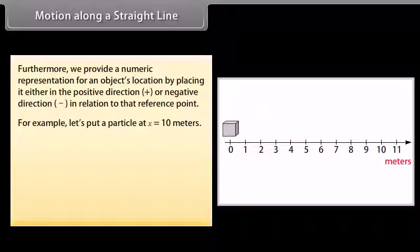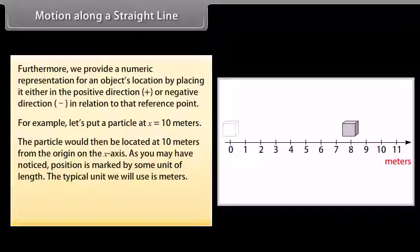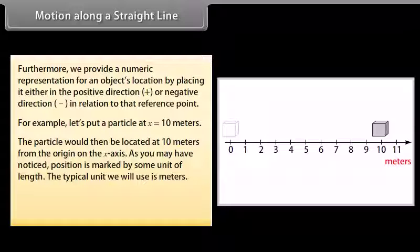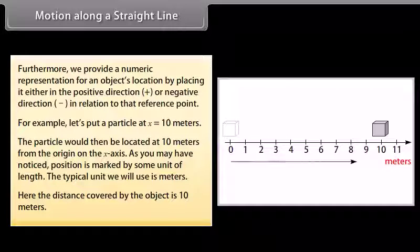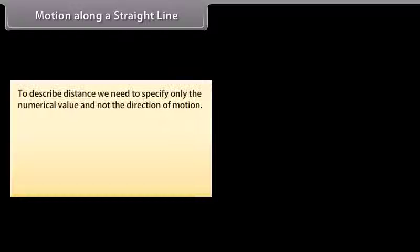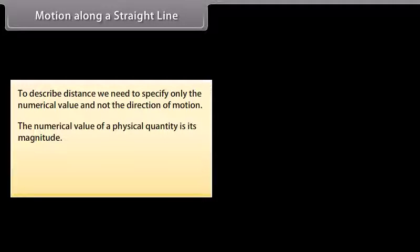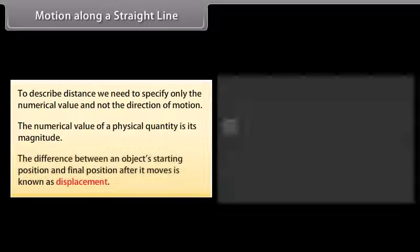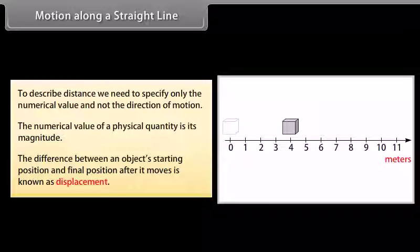For example, let's put a particle at x equal to 10 meters. The particle would then be located at 10 meters from the origin on the x-axis. Position is marked by some unit of length — the typical unit we use is meters. Here the distance covered by the object is 10 meters. To describe distance, we need to specify only the numerical value and not the direction of motion. The numerical value of a physical quantity is its magnitude. The difference between an object's starting position and final position after it moves is known as displacement.